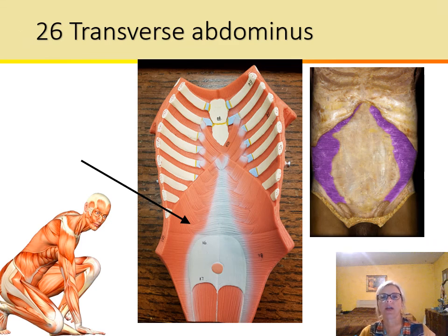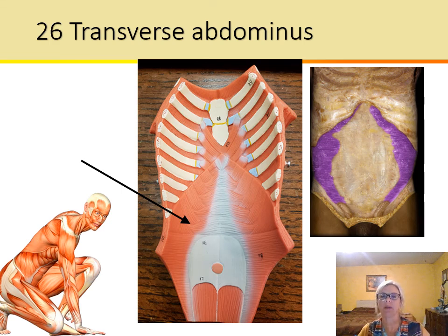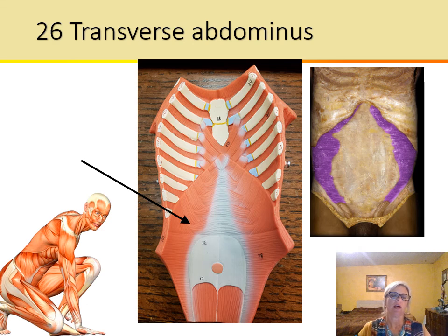Next we have the transverse abdominis. Transverse means it runs transversely, and abdominis refers to the abdomen — so this is the belly-crossing muscle. It compresses the abdomen.